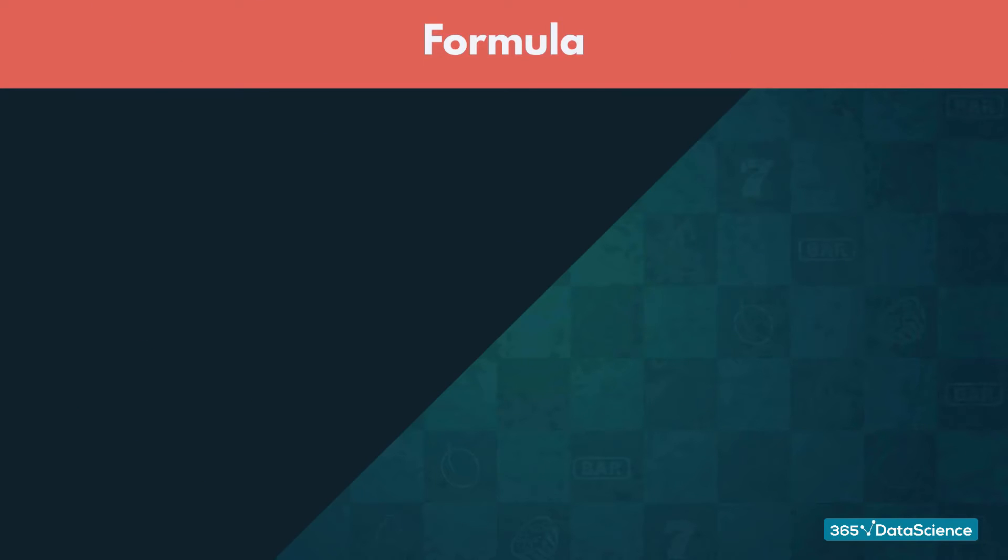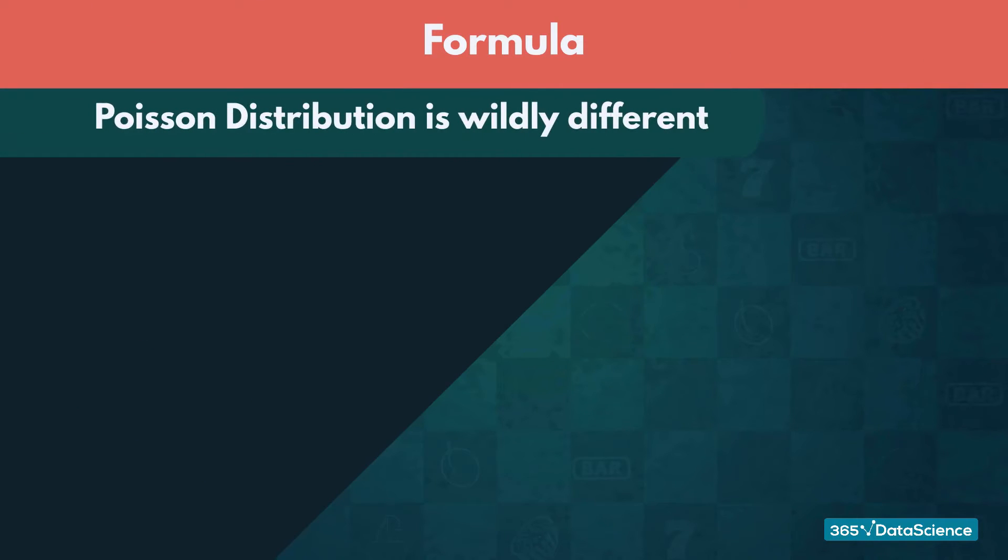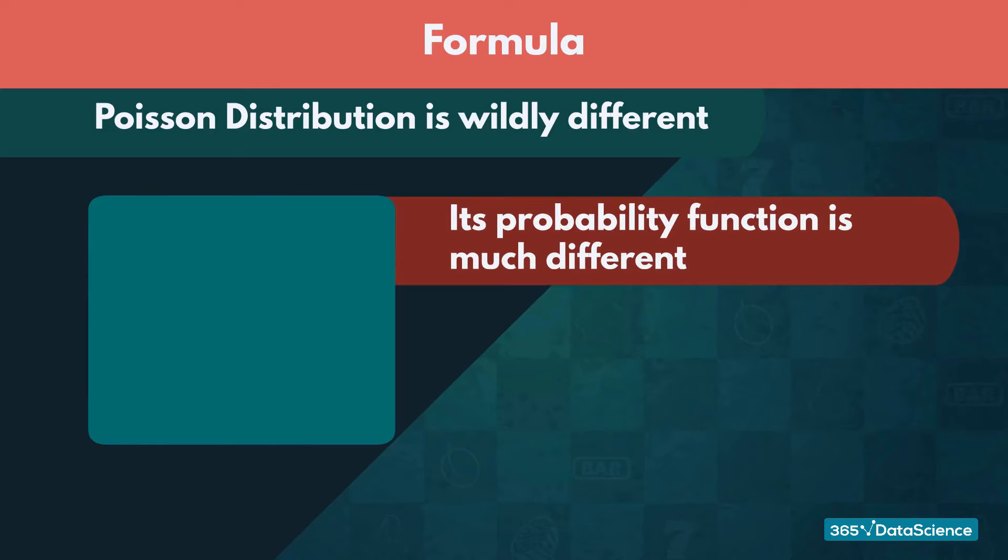As you already saw, the Poisson distribution is wildly different from any other we have gone over so far. It comes without much surprise that its probability function is far different from anything we have examined so far. The formula looks as follows.